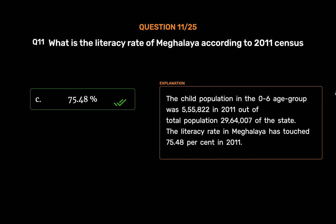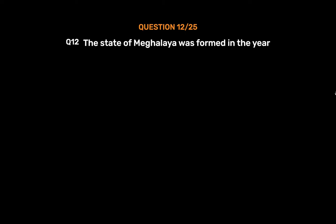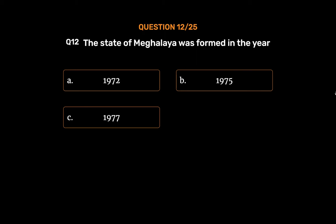Question number 12. The state of Meghalaya was formed in the year: Option A: 1972. Option B: 1975. Option C: 1977. Option D: 1979.